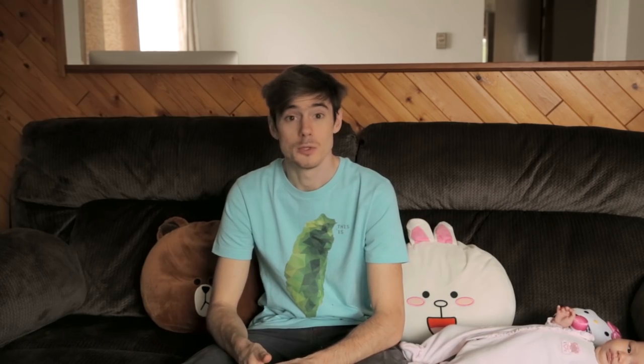But this only applies when you are missing something that is very, very close to you. So if you were talking about an object or a thing — let's say you've given up coffee and you really missed it — you wouldn't say 我想咖啡. Instead, you would say 我想念咖啡, which means 'to miss coffee.'